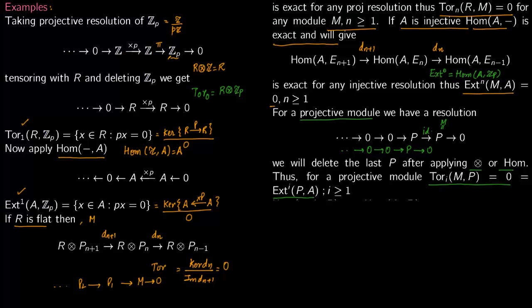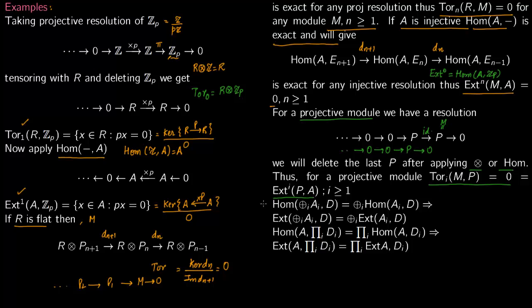So now again you have this Hom. So notice that this property we talked about before, so this holds from before. So corresponding to this functor Hom, we have this is the derived functor. Corresponding to this functor, this is the derived functor.